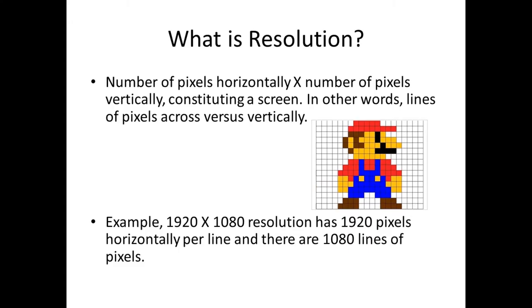Next we'll read about what is the resolution. So the resolution is a number of pixels horizontally into the number of pixels vertically constituting a screen, or in other words, lines of pixels across versus lines of pixels vertically. This also means resolution is actually the number of pixels in a screen horizontally versus vertically. For example, 1920 x 1080 resolution has 1920 pixels horizontally per line of pixels and there would be 1080 lines of pixels per screen.